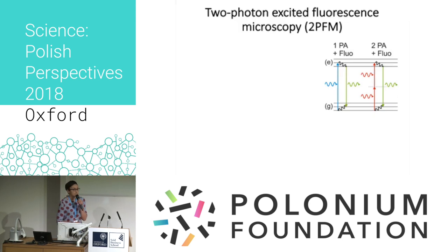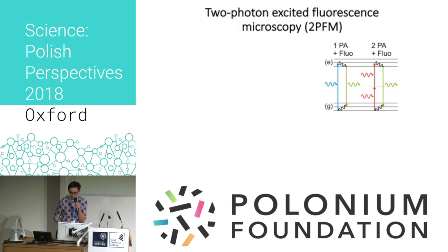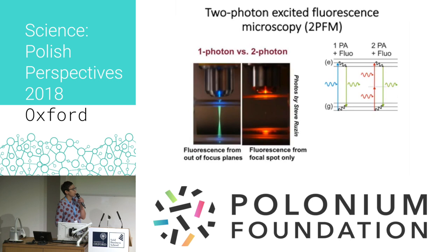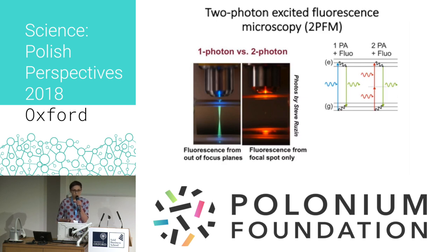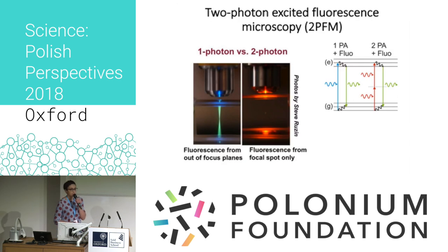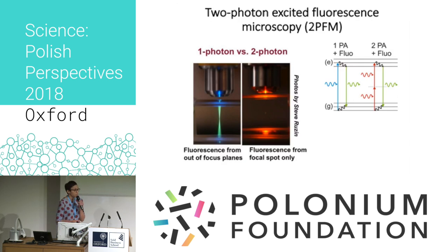Why is it interesting and what are the benefits? In order to observe this event, you need a simultaneous absorption of two photons, so you need a very high photon density — very high intensity of light. You can obtain that with pulsed laser beams, for example femtosecond laser beams.